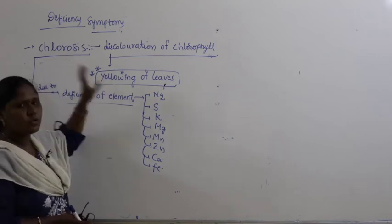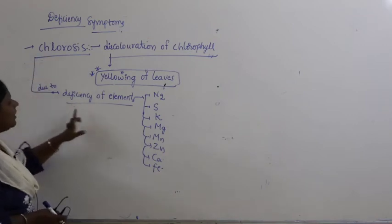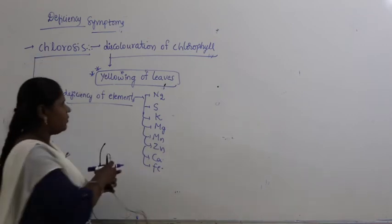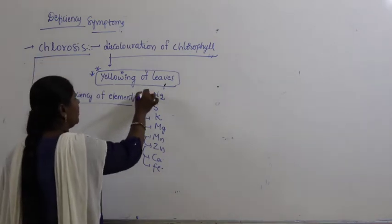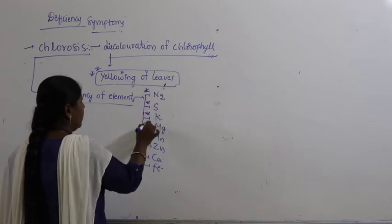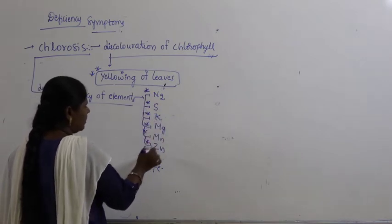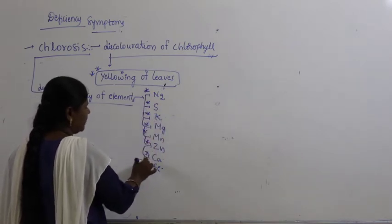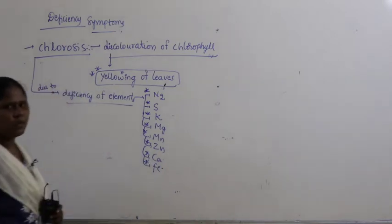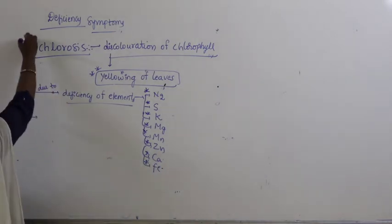Chlorosis is due to deficiency of elements such as nitrogen, sulfur, potassium, magnesium, manganese, zinc, calcium, and iron. Here and there you can see yellow patches or discolouration on the leaf — that is chlorosis.